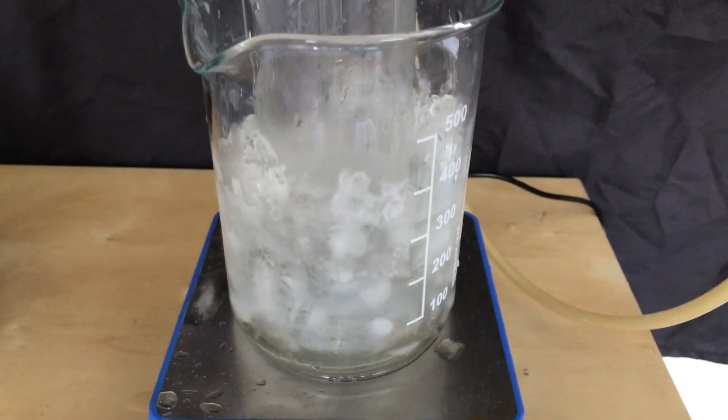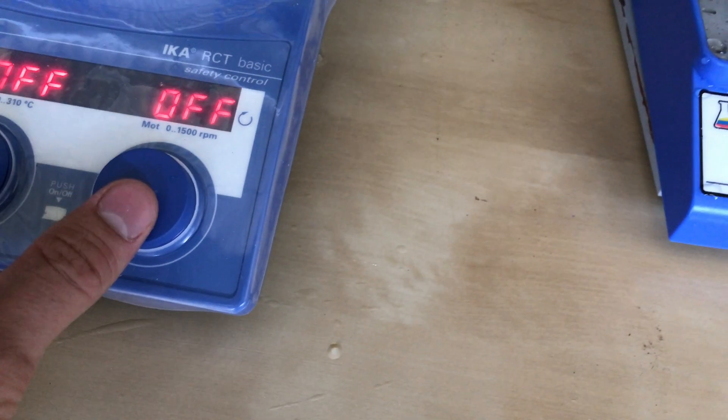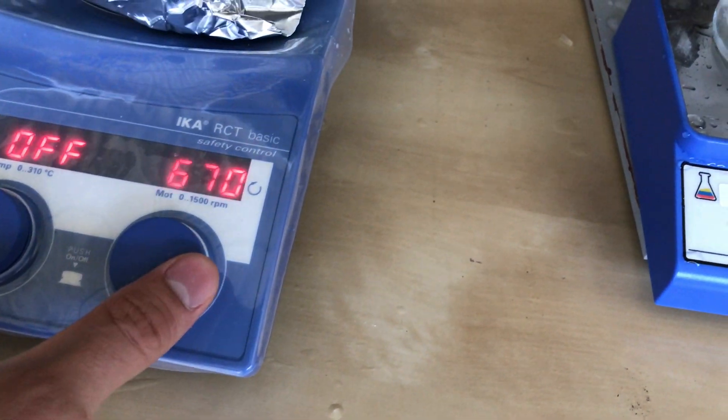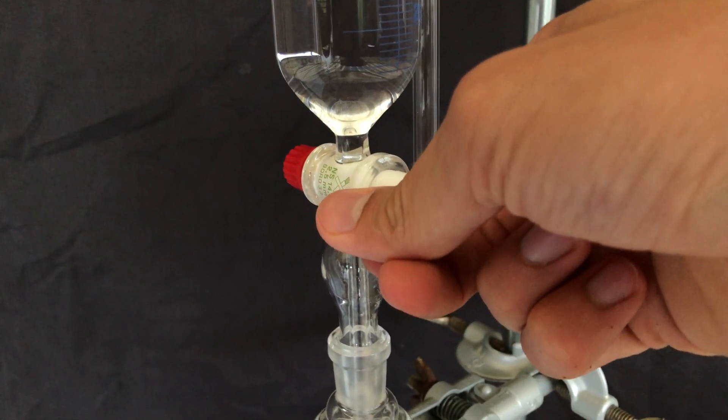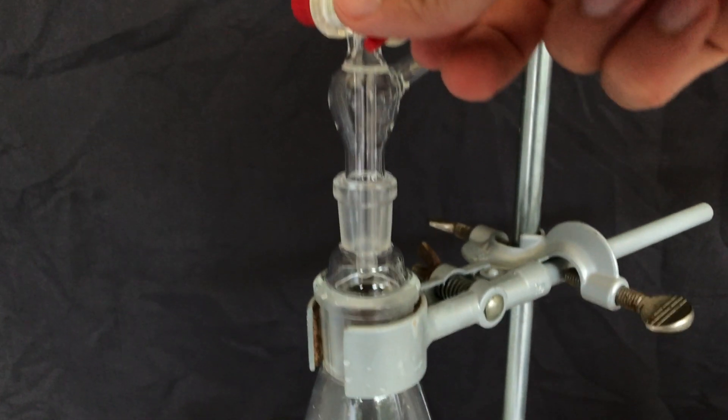The DMF was added to the pressure equalizing addition funnel and we set up an ice bath for the gas washing bottle. To start off we only had to do one thing: magnetic stirring was turned on and we opened the stopcock.